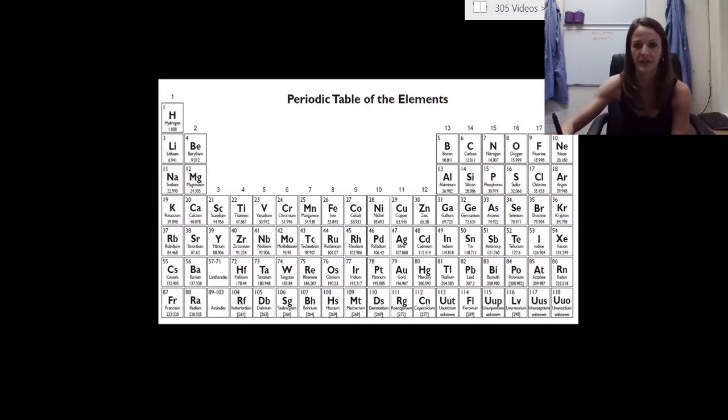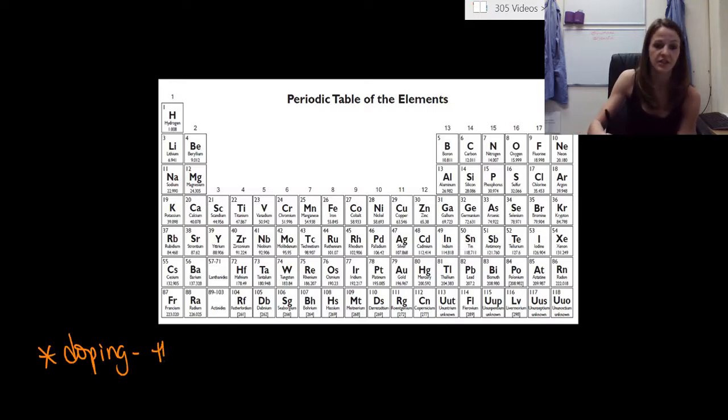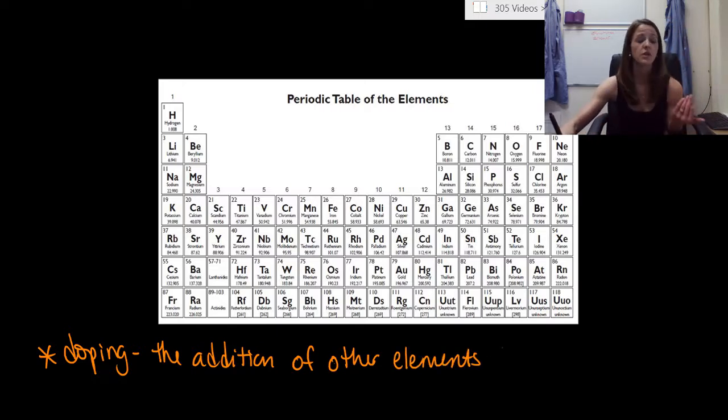So let's talk about doping really quickly. So doping is the addition of other elements to semiconductors, but since we're just going to focus on silicon, I'm going to make this definition for us. So of other elements to pure silicon here.